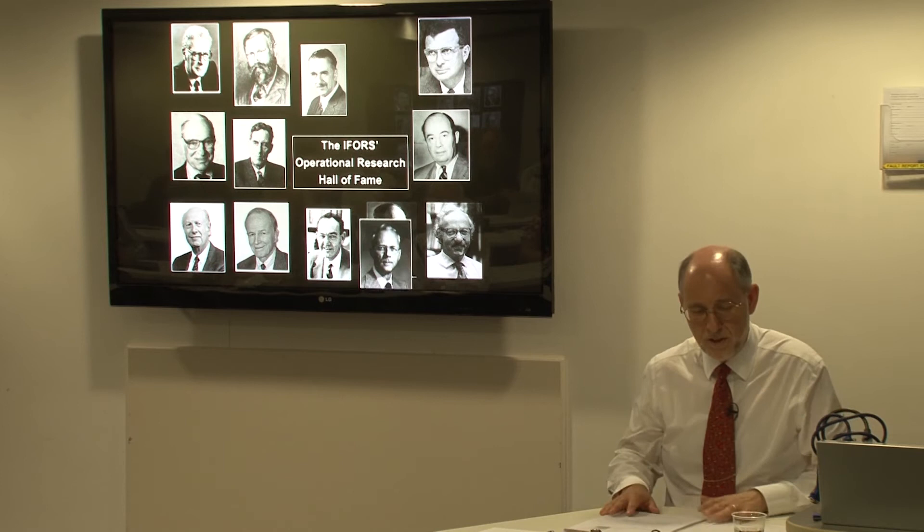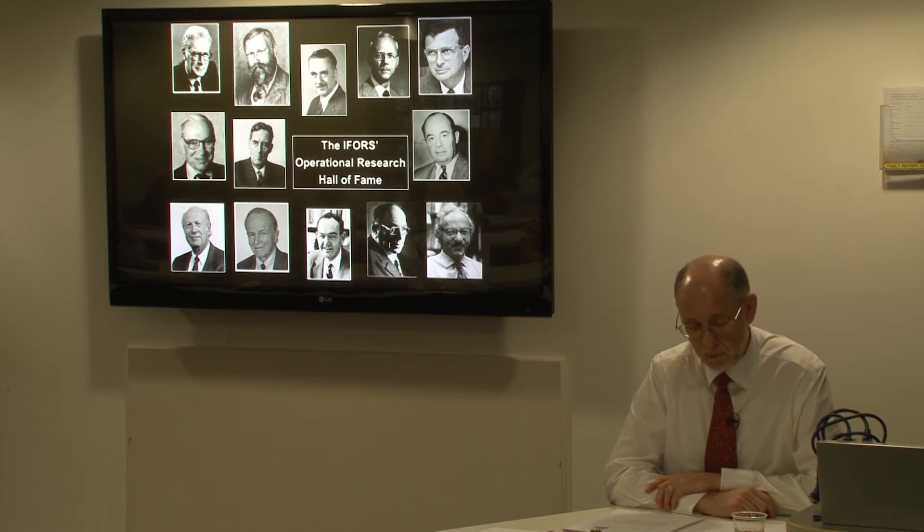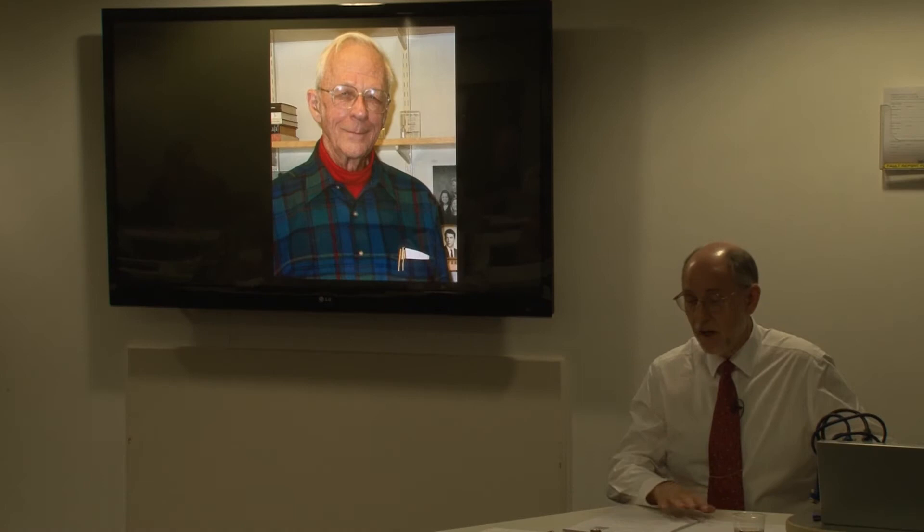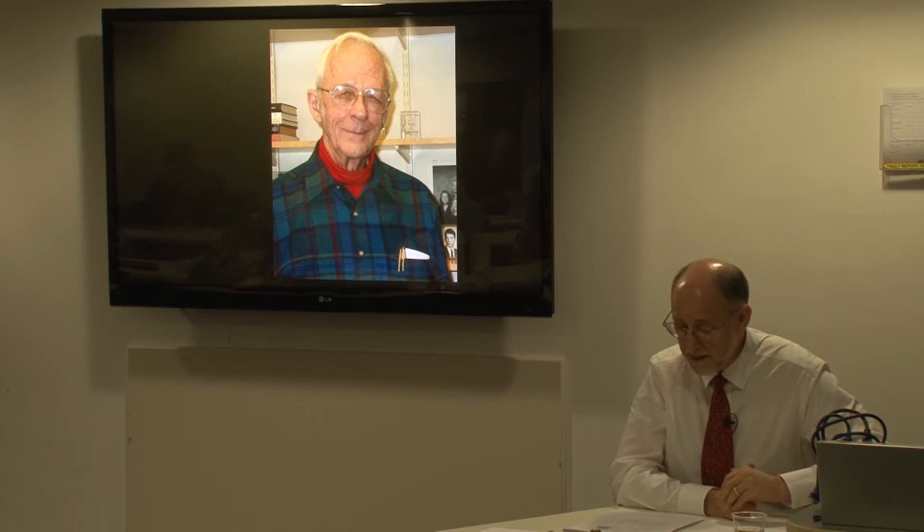Jay Wright Forrester is one of the great operational researchers. He is one of only 23 people who make up the INFORMS OR Hall of Fame. He died last year aged 98. This is him in 2002 in his office at MIT. He came a long way in space and in time. I'm going to talk about system dynamics a bit, one application in particular, but I'm actually going to concentrate on his other achievements, perhaps less well known.